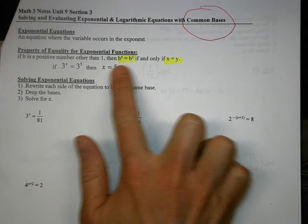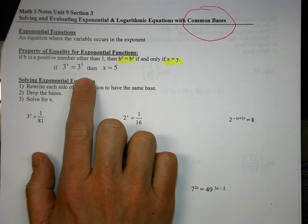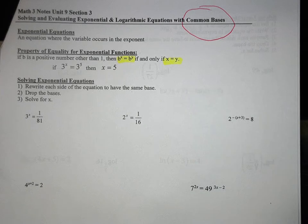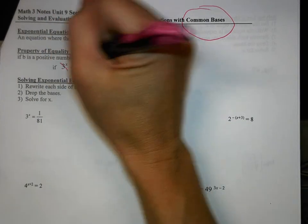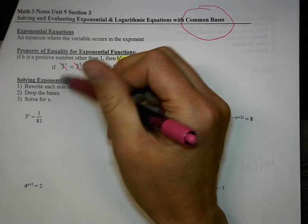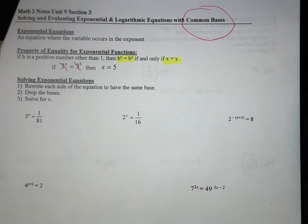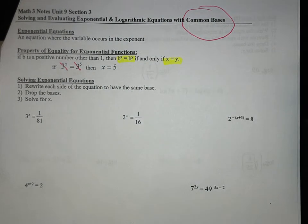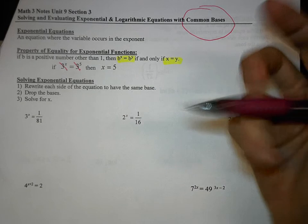So if we get like bases — for example, 3 to the X equals 3 to the 5th — then once the bases are the same, you can cancel them out, and you get X equals 5. Let's try some examples.